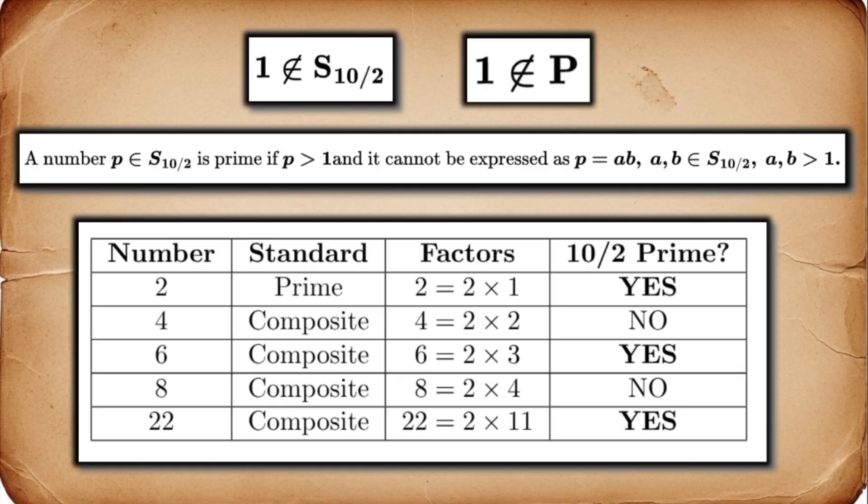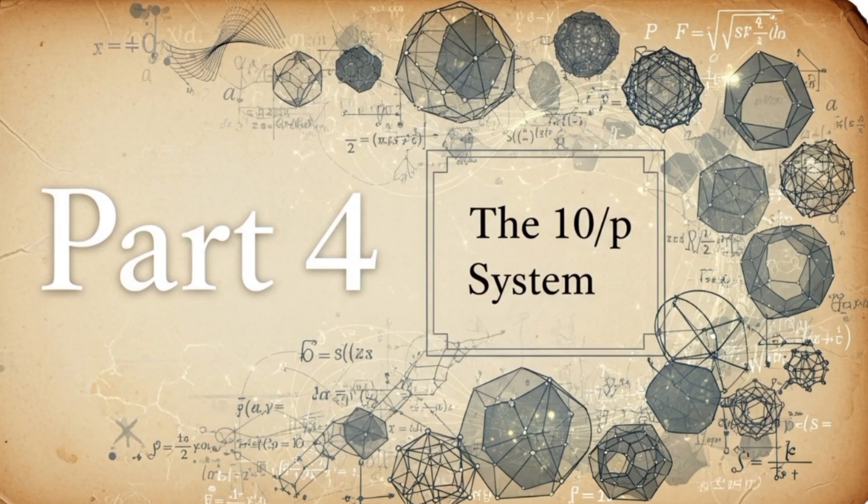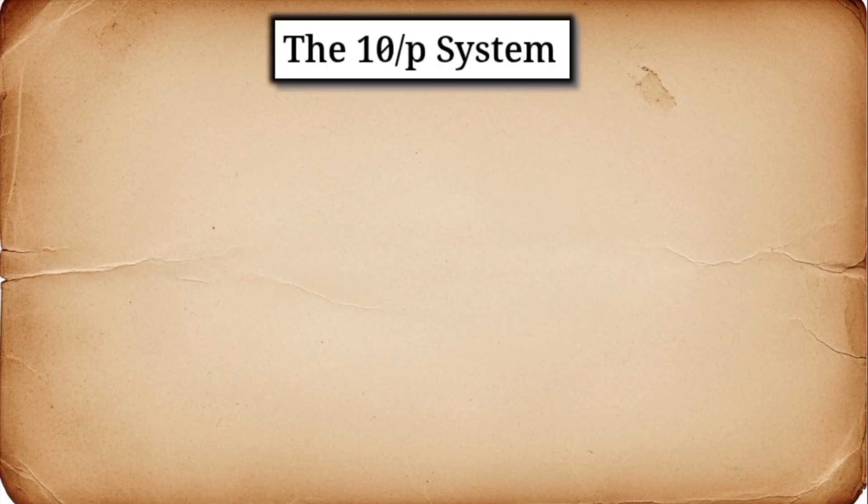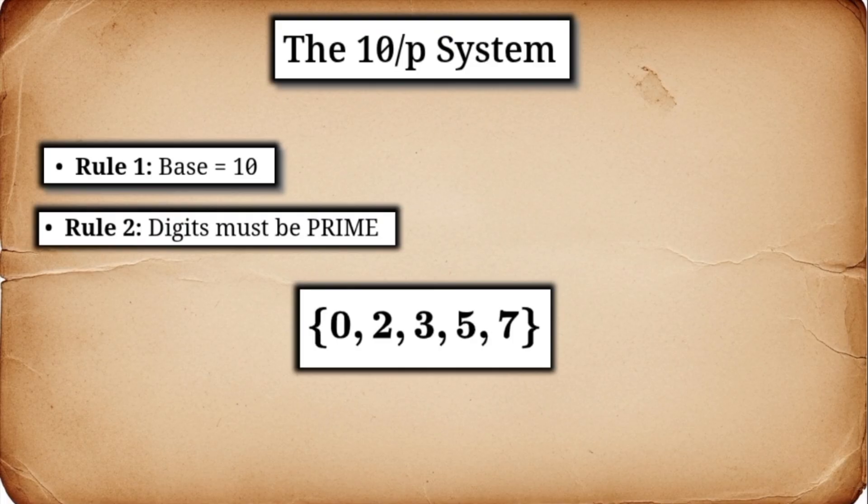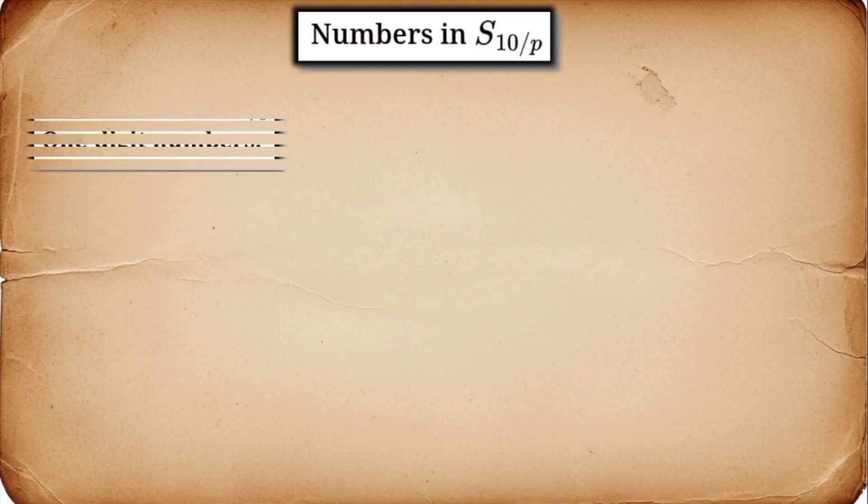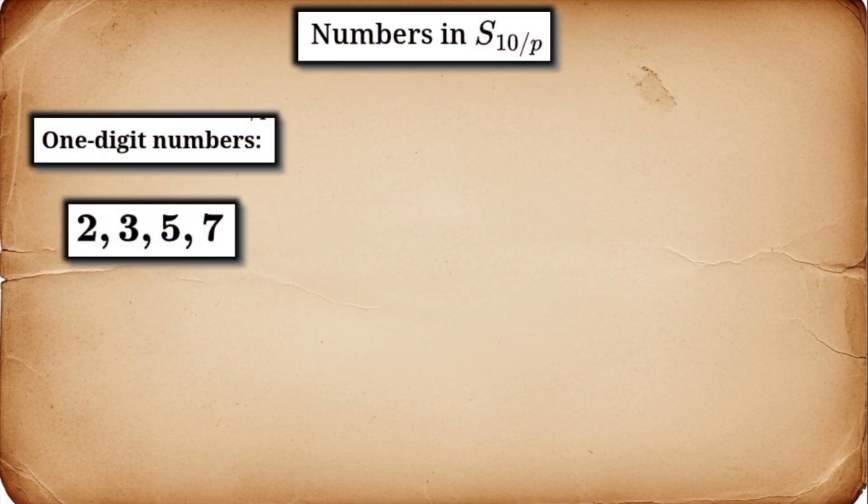The 10 over 2 system is fascinating. But what if we choose a more mathematically profound rule? Let's create the 10 over P system. Our allowed digits are the single-digit prime numbers: 2, 3, 5, and 7. And we'll also keep 0 as we need it for placeholding.